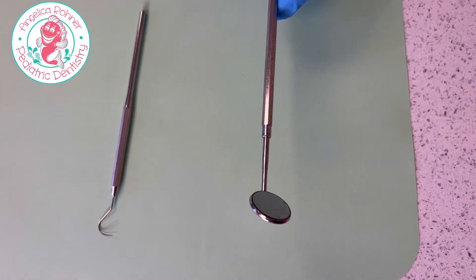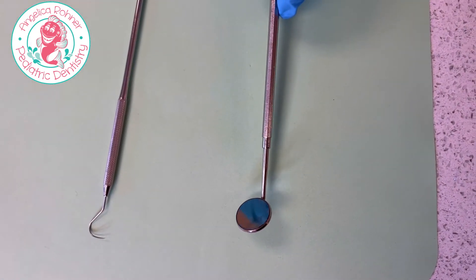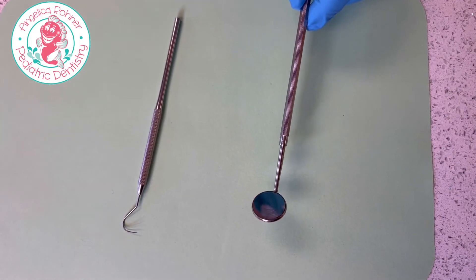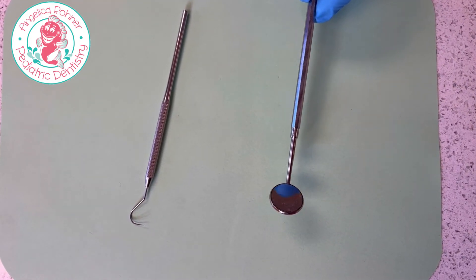This is called a Mira that we use in a dental exam. We use the Mira to look at all surfaces of the teeth and all the soft tissues in your mouth.